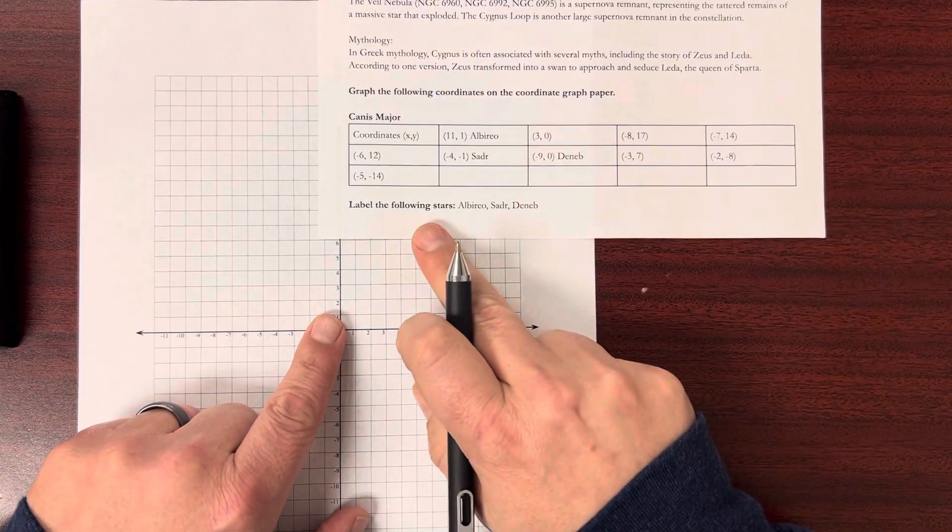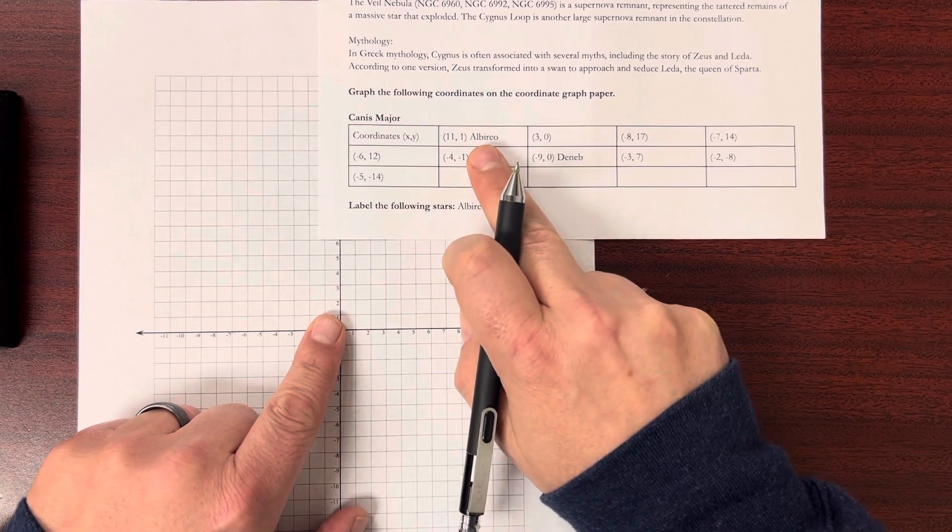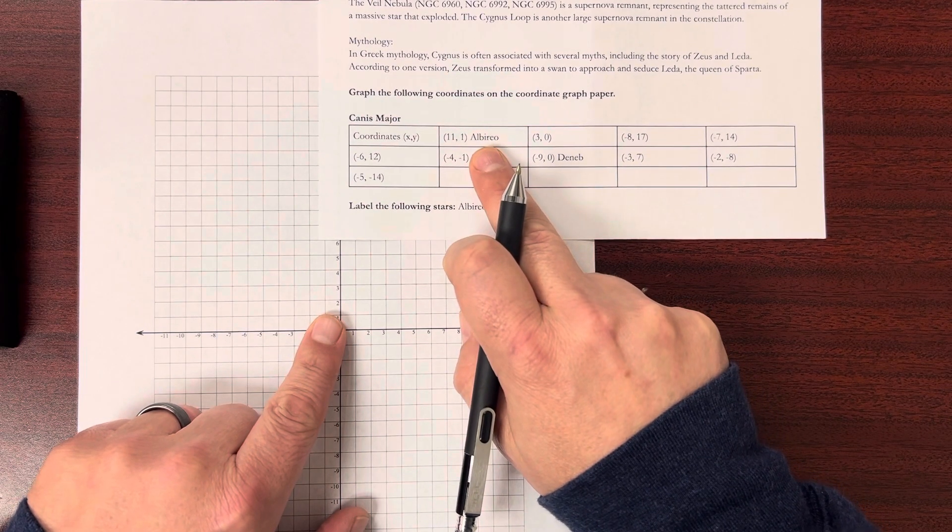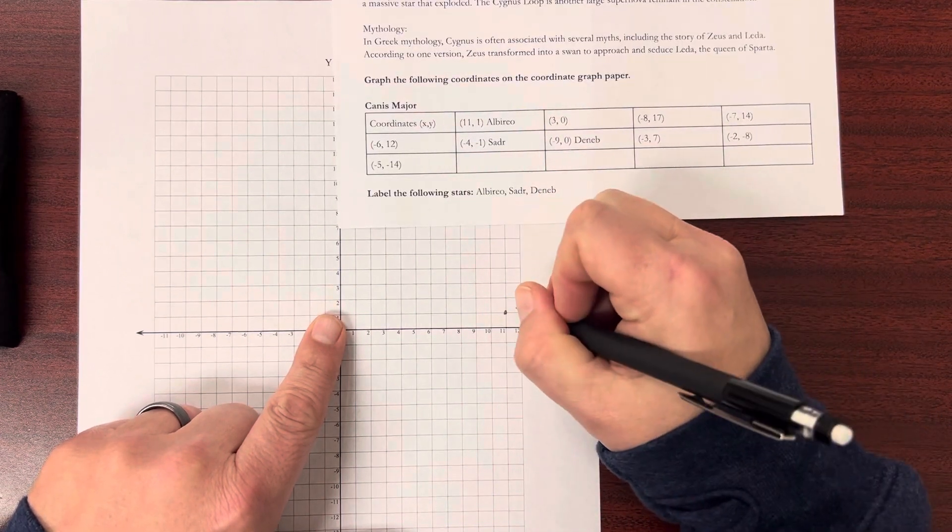Now it does say to label these three stars. This is one of them. So I'm going to go ahead and label this one.